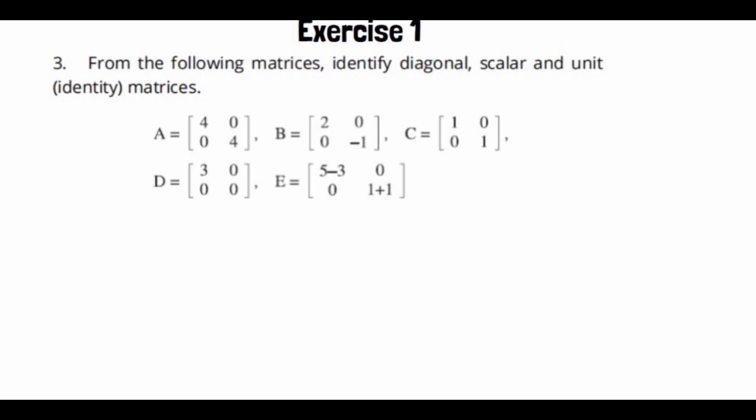Exercise 1.2, Question No. 3: From the following matrices, identify diagonal, scalar, and unity matrices. A scalar matrix is one where diagonal entries are non-zero and the same, and non-diagonal entries are zero.